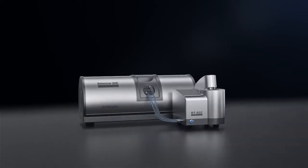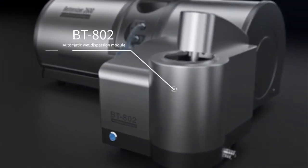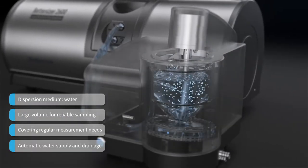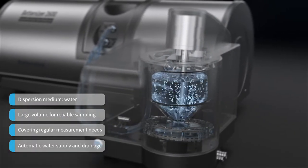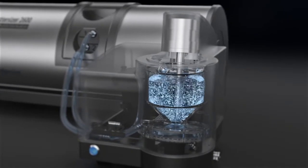Matching up with the BT-802 automatic wet dispersion module, the BetterSizer 2600 can efficiently measure the size distribution of particles dispersed in aqueous mediums. Adjustable stirring speed and built-in ultrasonic system ensure stable dispersion of samples.